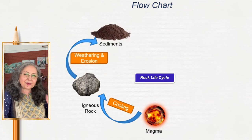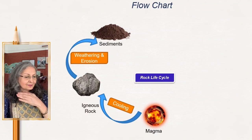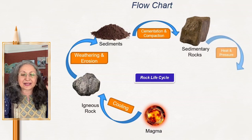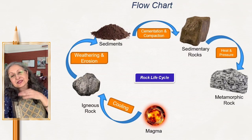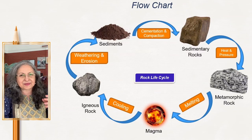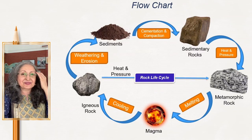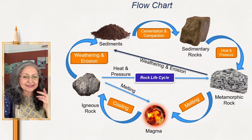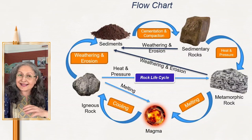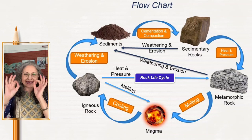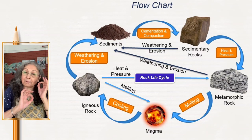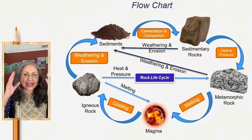I'm beginning with the magma. It's a cycle so I could have started anywhere, but let me begin at the center of the earth — hot molten lava. When it cools it becomes igneous rock, and when it weathers and erodes it becomes sediments. With cementation and compaction it becomes sedimentary rock. Through heat and pressure it converts into metamorphic rock, and it melts and goes back as magma — which is why it is a cycle. The water cycle, butterfly life cycle, a plant life cycle, all could be shown through a flow chart.